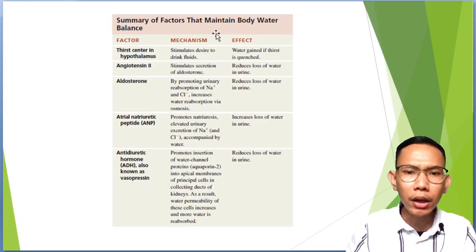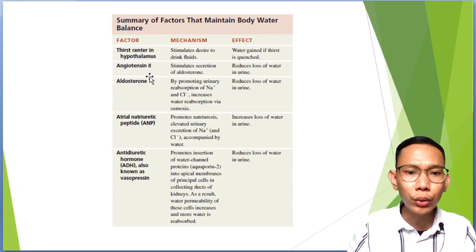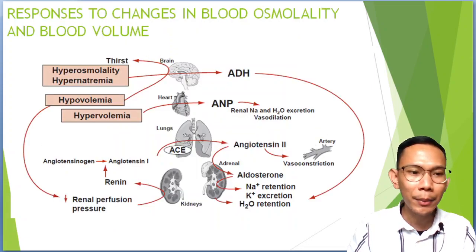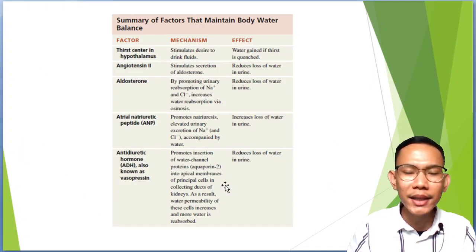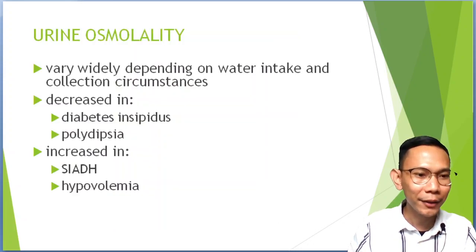These are the summary of factors that maintain the body water balance: your thirst center in the hypothalamus, angiotensin 2, aldosterone, ANP, and antidiuretic hormone. Reviewing the diagram gives an overview of their mechanisms and effects.